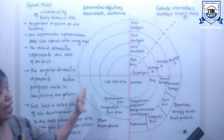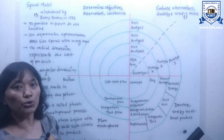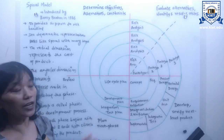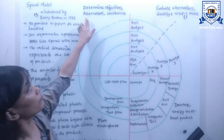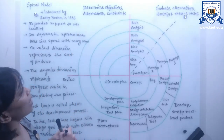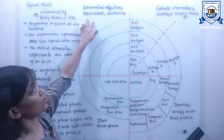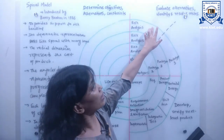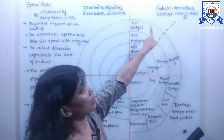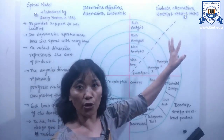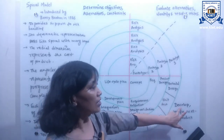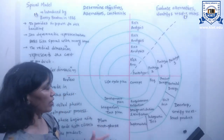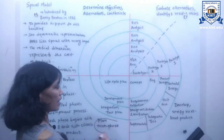By the diagrammatic representation, you can see the activities of phases are divided into four quadrants. The first quadrant is about determining objectives, alternatives, and constraints. The second quadrant is about evaluating alternatives and identifying and resolving risks. The third quadrant is about developing and verifying the next level product, and the fourth quadrant is about planning the next phase.